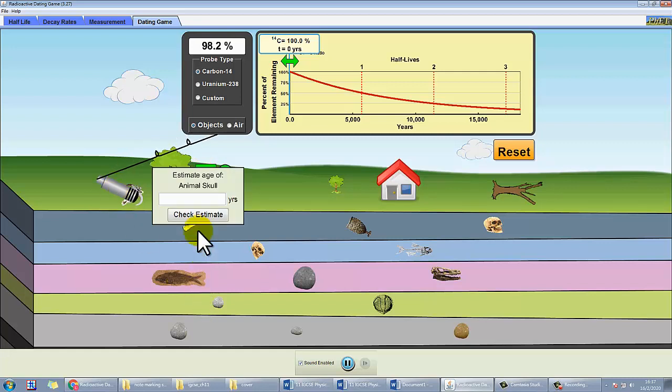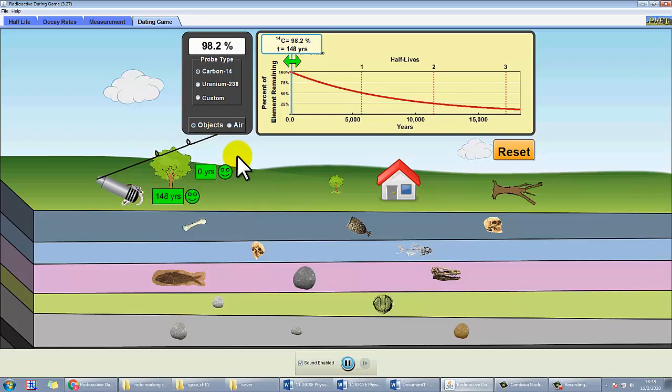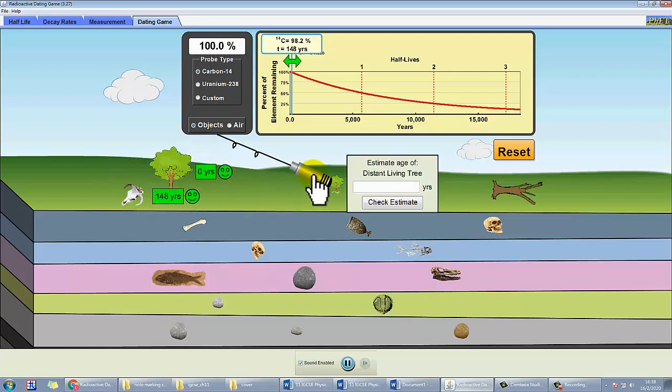Say for this skull, it's at 98.2% of carbon-14. So what you can do is, you know the half-life is about 5,800. Of course you can do calculation for that. But then since you have a nice tool here, you can try to drag, you can simply go to drag until 98.2%, which is about 148 years. And you show you the answer is correct. If you type a wrong answer, let's say for this living tree, you type say 100, it will be wrong apparently. So you can try to change your answer. And this apparently is zero also.